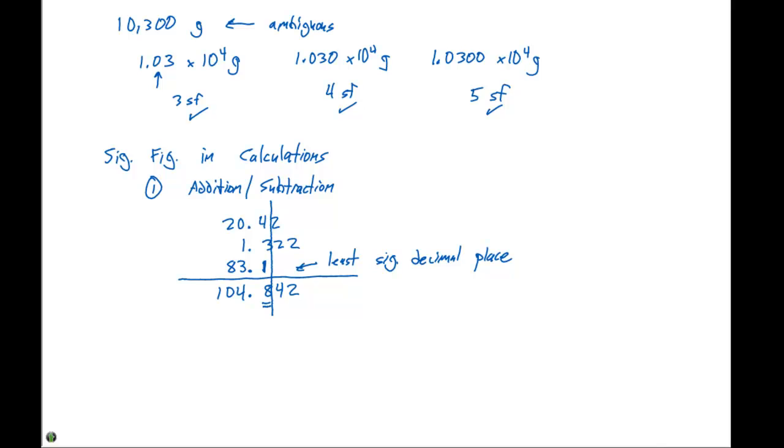So in this case, our value needs to be rounded to 104.8. And the reason for that is because our 83.1 is gonna restrict the significant figures here.